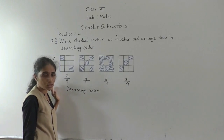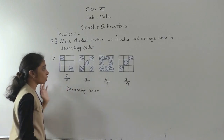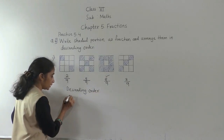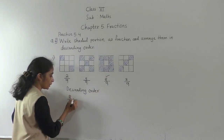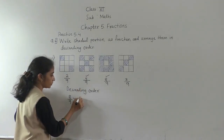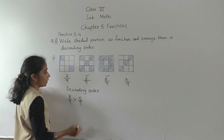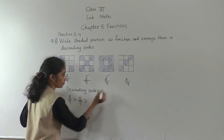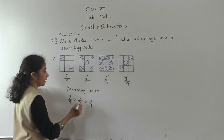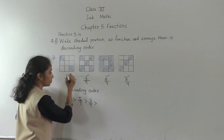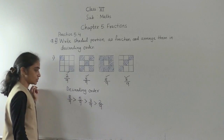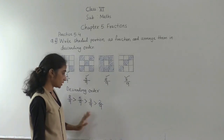So we just have to compare the numerators. Descending order means big to small. Which is greatest? 8 upon 9. Then after that 5 upon 9, then 3 upon 9, and after that 2 upon 9. So big to small — that is the descending order.